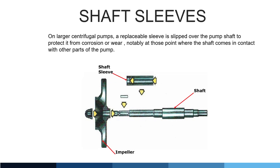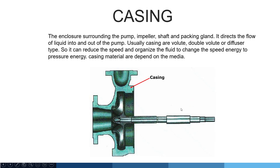Shaft sleeves. On larger centrifugal pumps, a replaceable sleeve is slipped over the pump shaft to protect it from corrosion or wear, notably at those points where the shaft comes in contact with other parts of the pump. Here you can see again the parts: impeller, shaft sleeve, shaft, and casing.